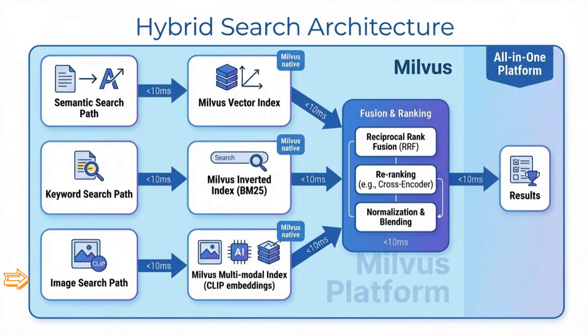All three searches happen in parallel — we're talking sub-10-millisecond latency. Then Milvus fuses the results together using a ranking algorithm combining semantic relevance, keyword matches, and visual similarity into a single score. The output: the most relevant properties ranked by how well they match your actual intent, not just keywords. You get the precision of keyword matching, the intelligence of semantic understanding, and the visual awareness of image search all in a single query.